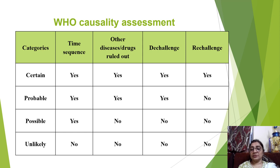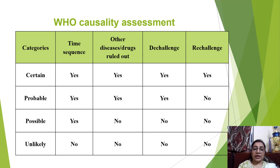Dechallenge means if the drug is stopped and the reaction disappears. Rechallenge means reintroduction of the drug causes reappearance of the reaction — if this occurs, the category is 'certain.' In the 'probable' category, rechallenge is not possible due to severity of reaction, such as Stevens-Johnson Syndrome. In 'possible,' time sequence is present but the reaction may be due to another drug or disease. In 'unlikely,' there is no time sequence, other diseases or drugs are not ruled out, and dechallenge or rechallenge has not been done.